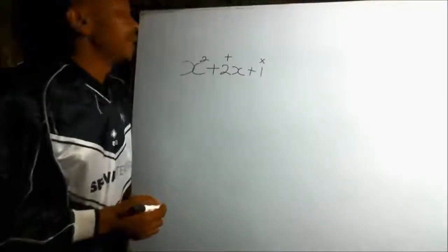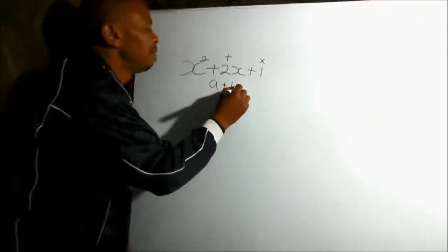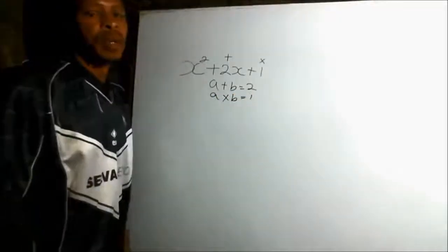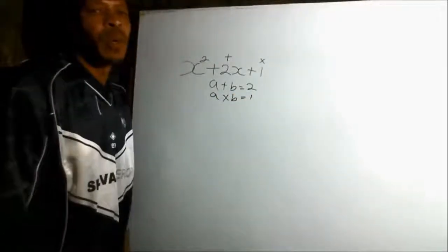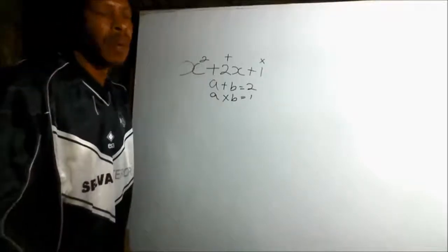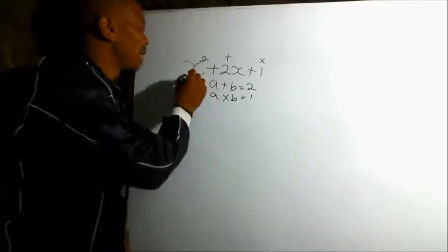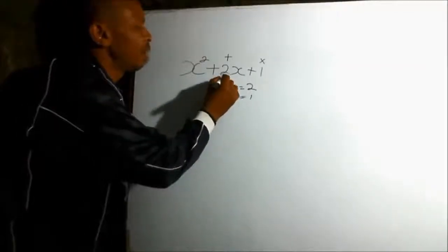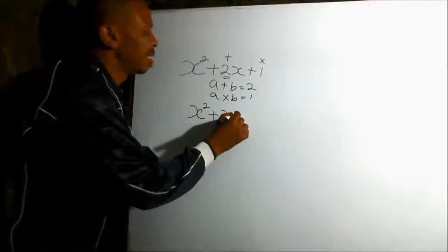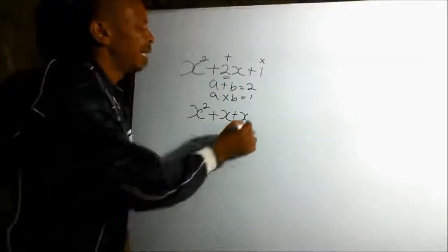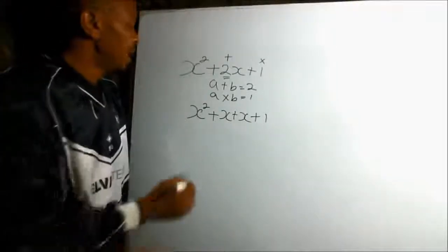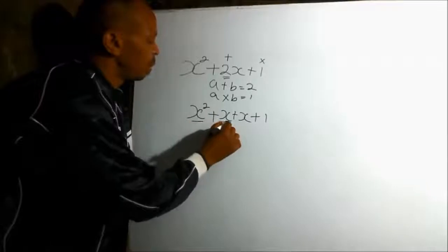In this quadratic expression, our two numbers — a plus b should give us 2, and a multiplied by b should give us 1. We realize that 1 plus 1 is 2, and 1 times 1 is 1. So we rewrite our quadratic expression like this: x squared plus, instead of 2x, we say it is x plus x, which is the same as 2x, plus our constant 1. Once we do that, we factorize what is common.